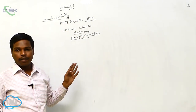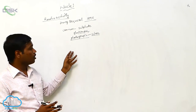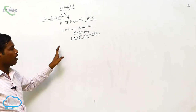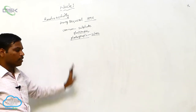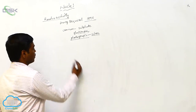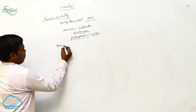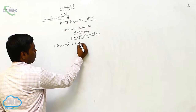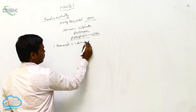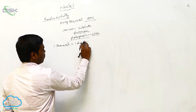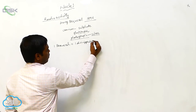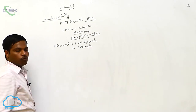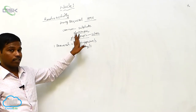Radioactivity means the nucleus of an element decays into some other nucleus. This is called radioactivity. Radioactivity has the unit becquerel. One becquerel is equal to one disintegration per second, or one decay per second.